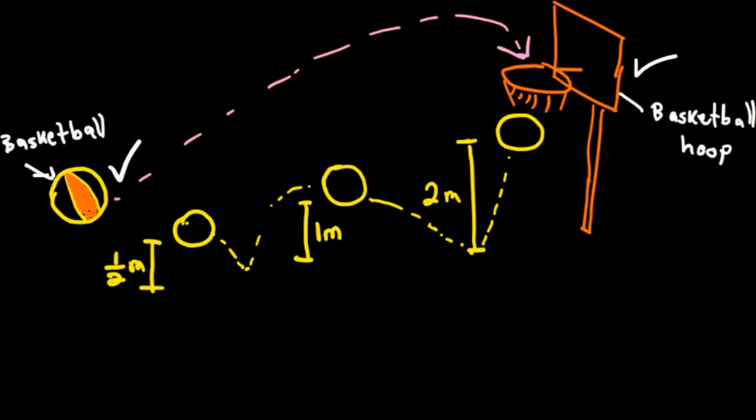When writing this in sequence format, we start from where the ball initially started. If we take the heights from right to left, the sequence is: 2 meters, 1 meter, and 1/2 meter.